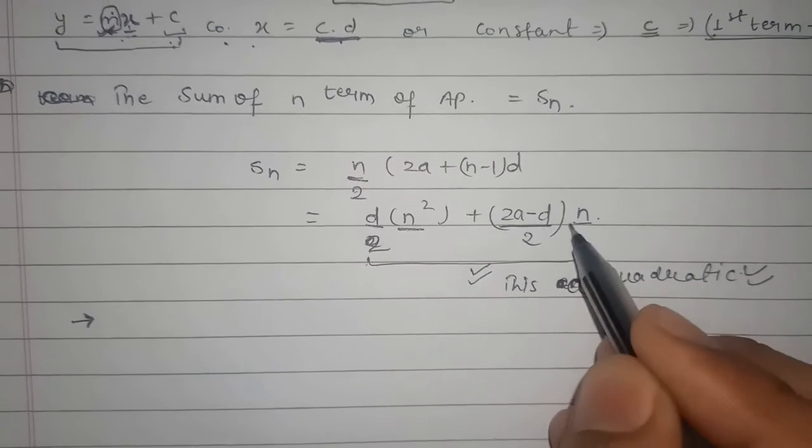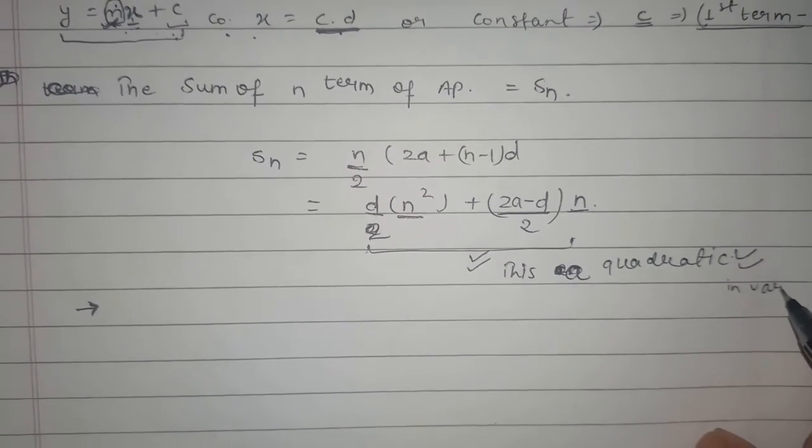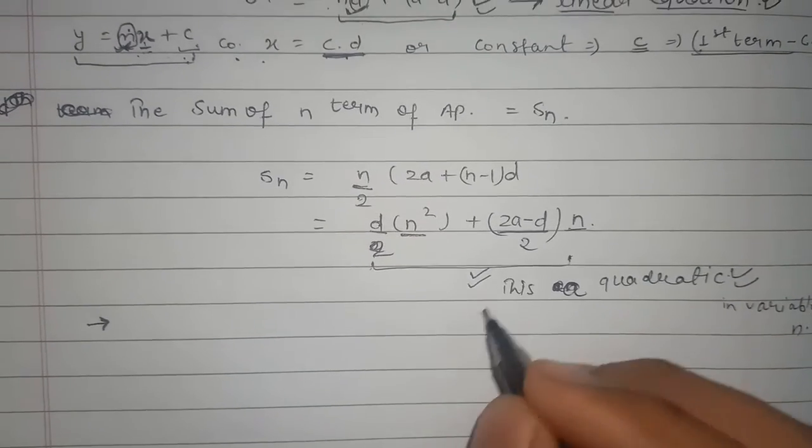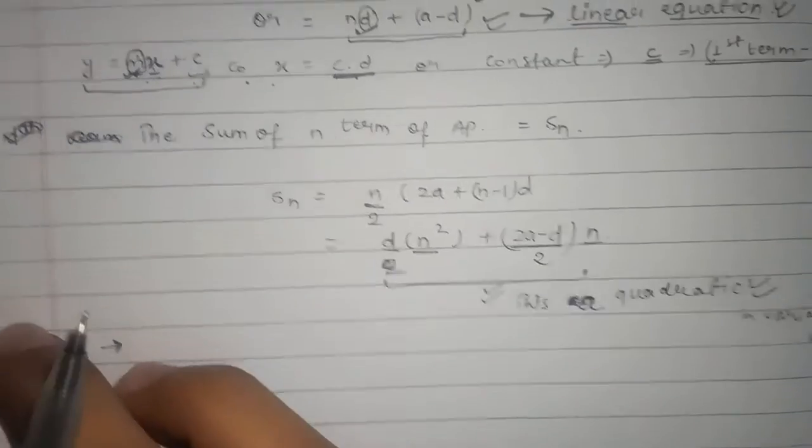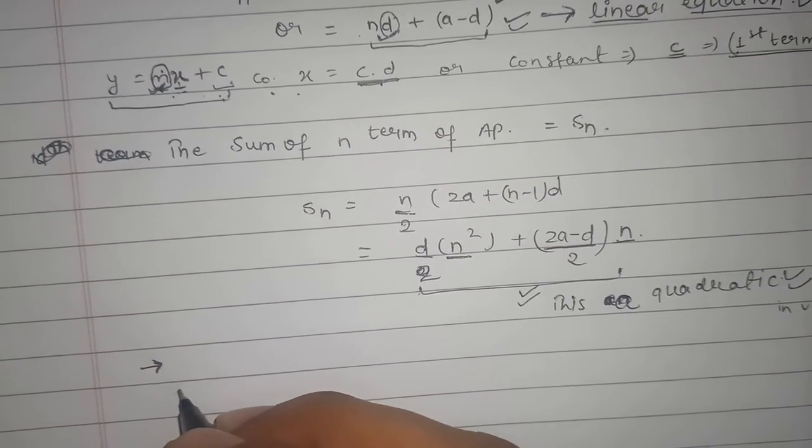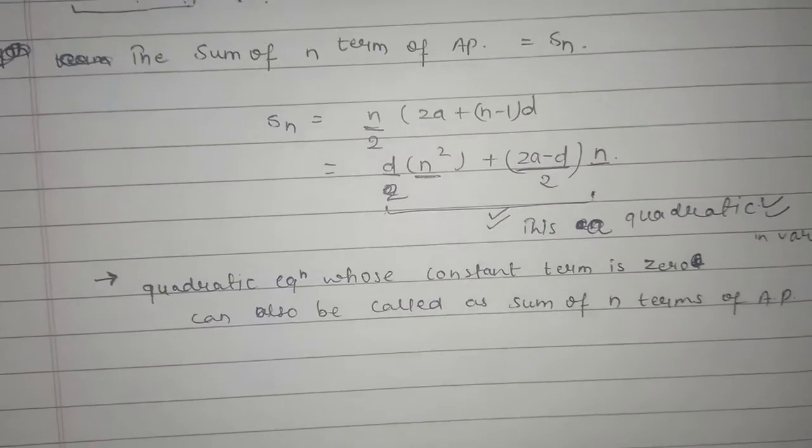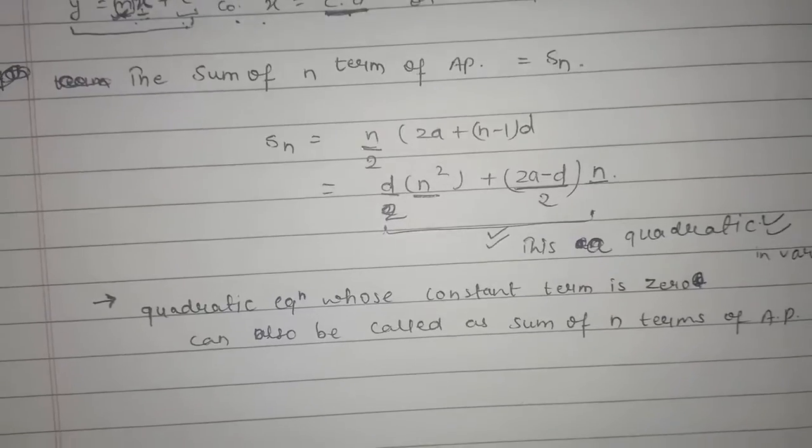It's a form of quadratic equation in variable n, and also it's constant term is 0. Or we can also say that it's a form of a quadratic equation whose constant term is 0, which can also be called as sum of n terms of an AP.